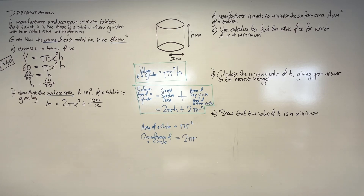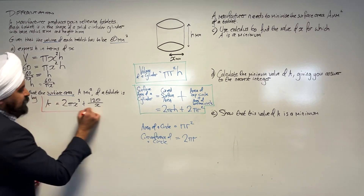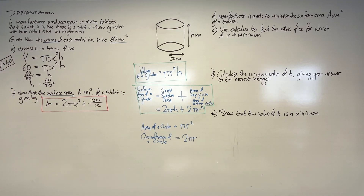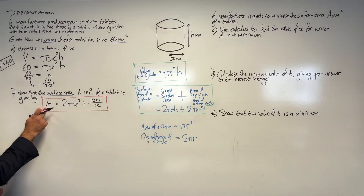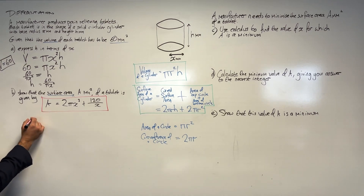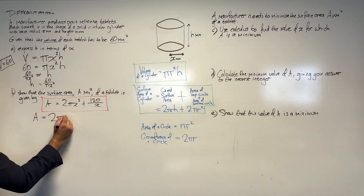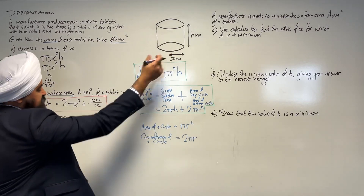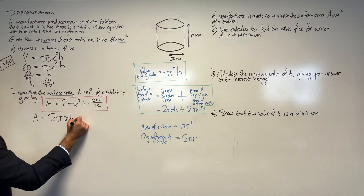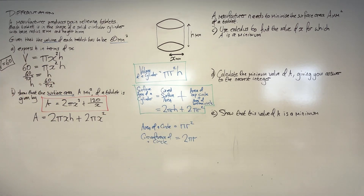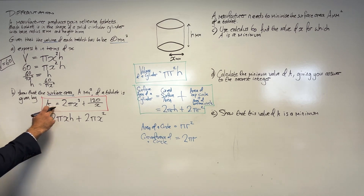Moving on to part B: show that the surface area of a tablet is given by a specific expression. Even if you can't do part B, that shouldn't stop you from attempting parts C, D, and E — you've been given the expression. I'm going to use A to represent the surface area, as the exam question does. Using our GCSE formula with radius x: A equals 2 pi x h plus 2 pi x squared. I've just literally taken it from the surface area formula. Notice that this expression has A in terms of x and h.